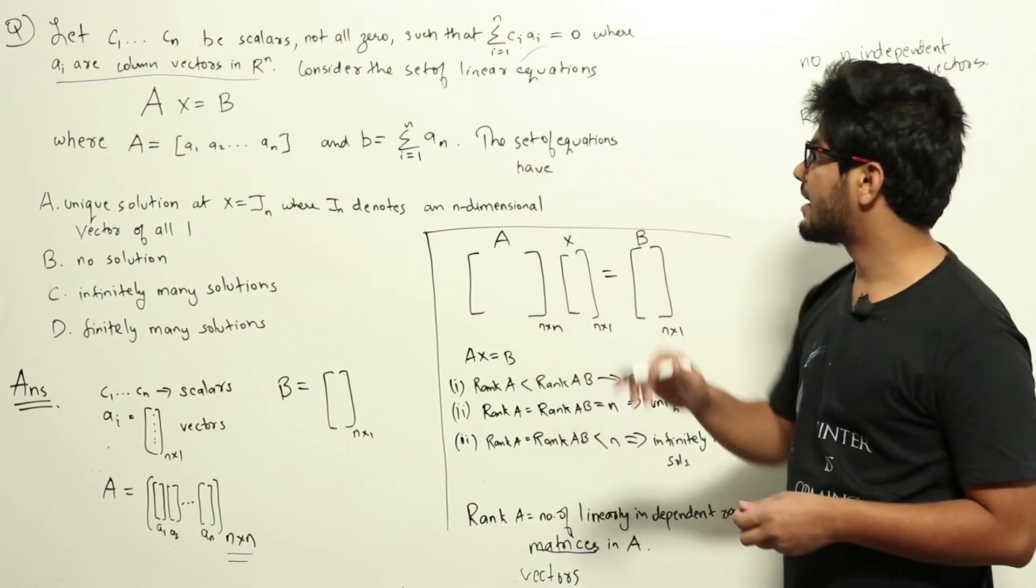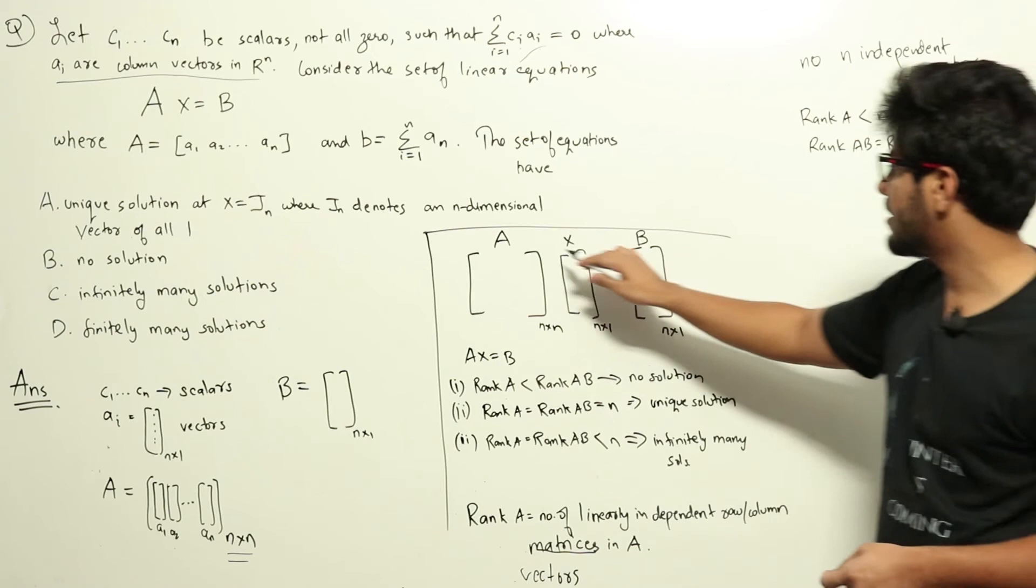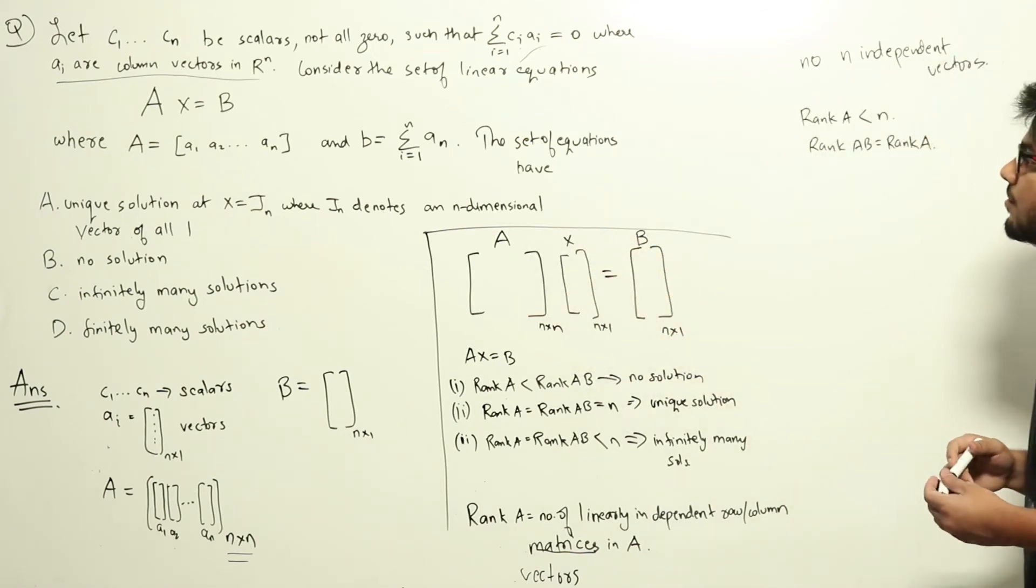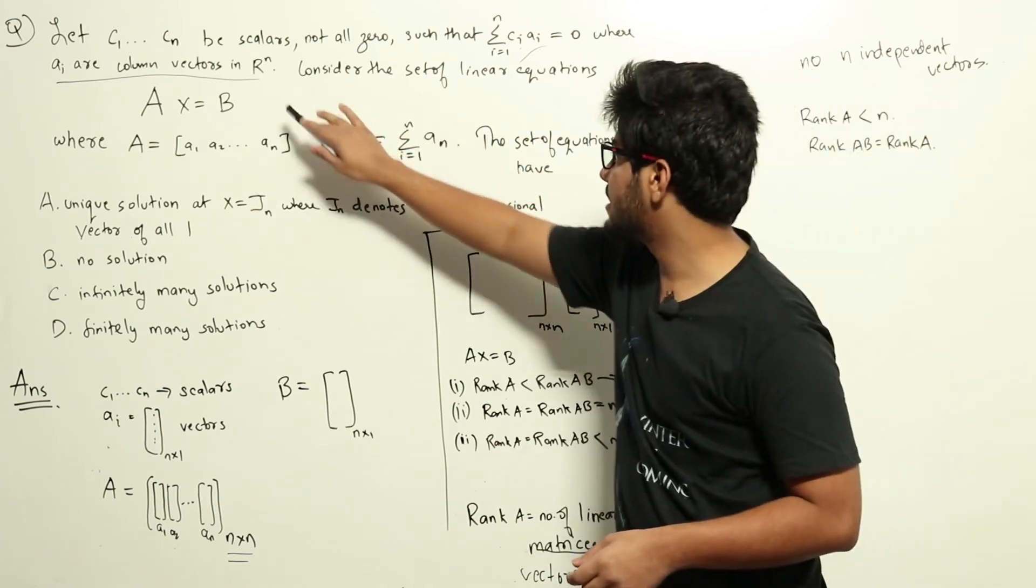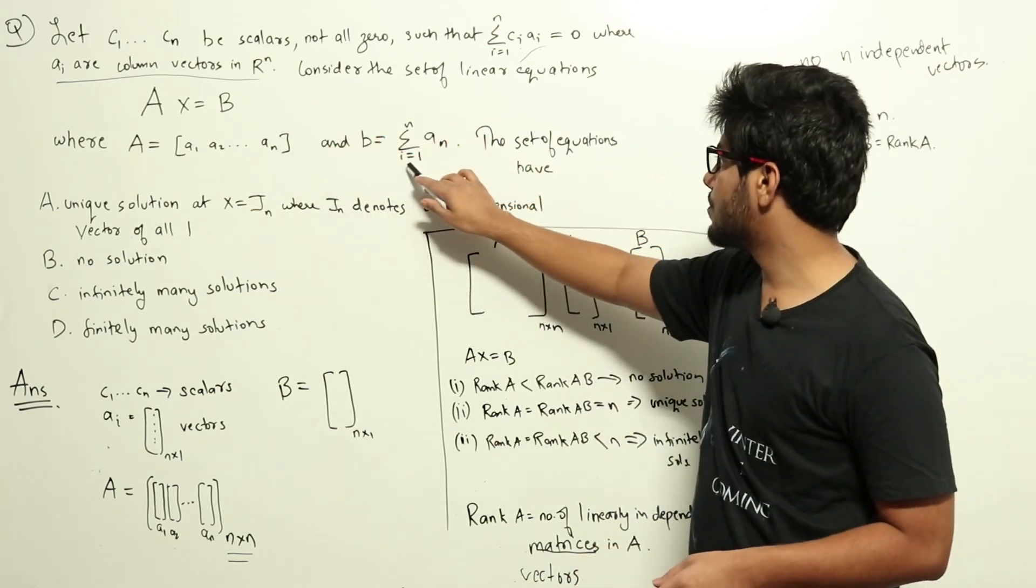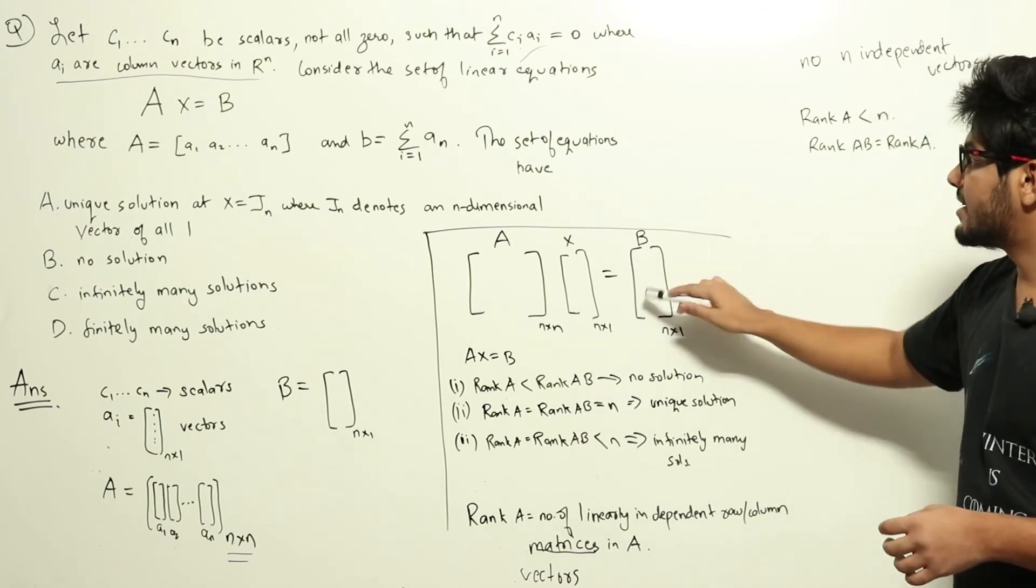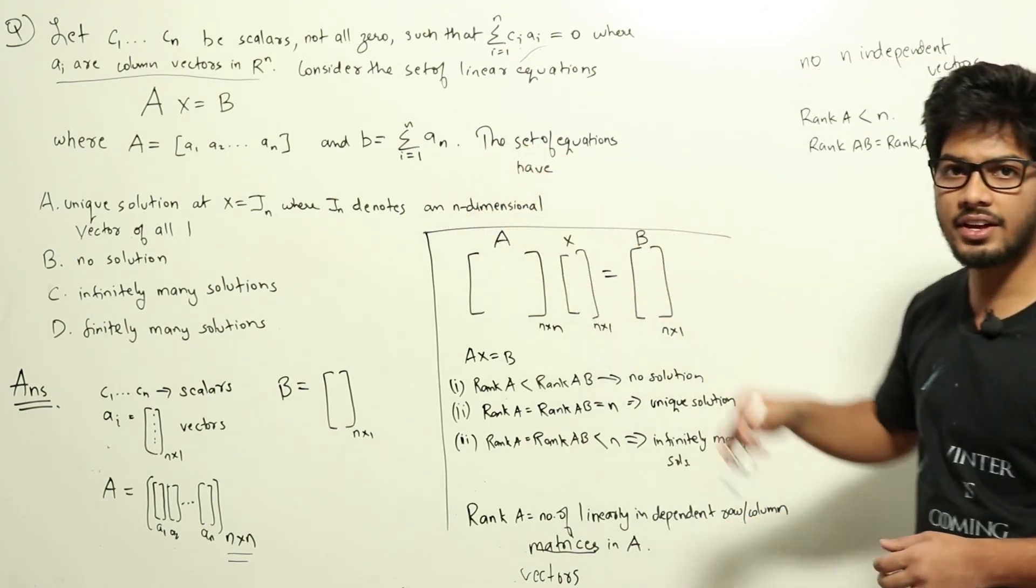Let us take a look at rank of Ab, which is A augmented with b to the right side. If you look at b, you can see that b is the sum of sigma i equal to 1 to n ai. So this new vector b is a sum of a1, a2, a3, up to an.